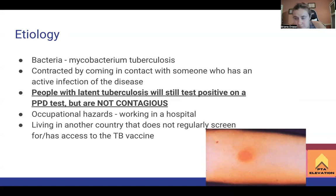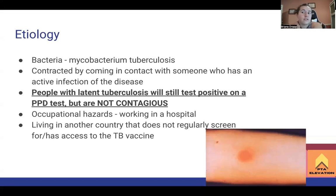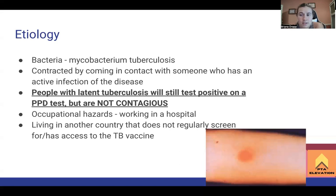Some of you may have gone for your PPD testing where you got the little PPD placed in your arm to see if you had tuberculosis. It might have turned a funky reddish color, or some people report it really burns and starts turning purple and blue. Anything other than it fading to nothing is considered a positive PPD test, and you would have to get a chest x-ray to see if you have latent tuberculosis.